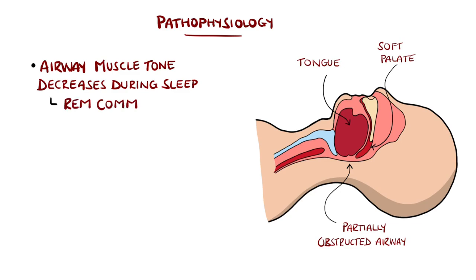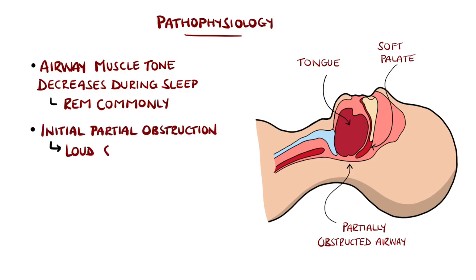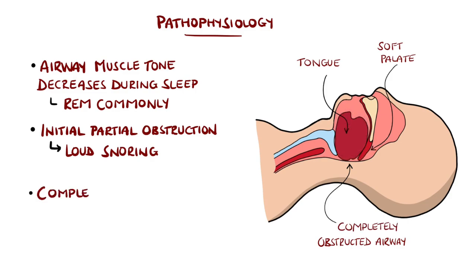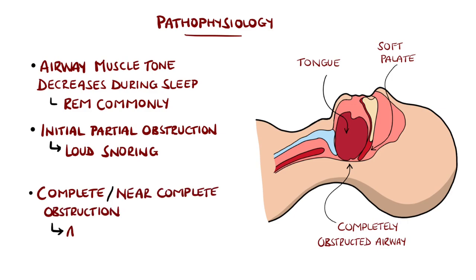Rapid eye movement or REM sleep in particular is known to feature this reduction in muscle tone, but it can happen throughout the sleep cycle. There is snoring when some air still enters, but as the obstruction progresses, the airflow can be severely reduced, causing apnea.